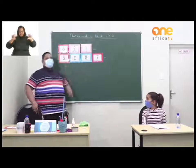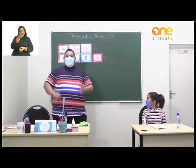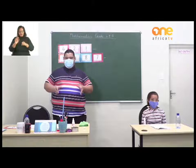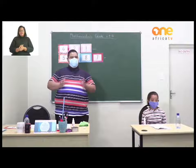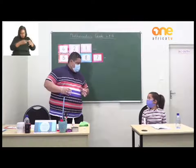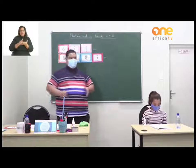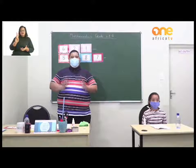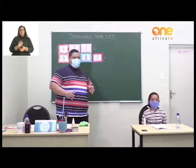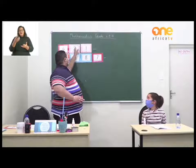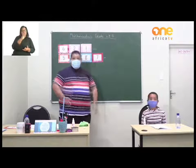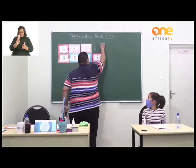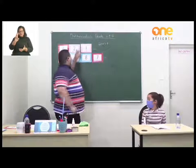Let's go to the chalkboard. Here we have 621. They want us to write that number in expanded notation, so we're going to break up the numbers according to their values. The first number we write is the 6. Going back to place value, the 1 is a unit, the 2 is a ten, and the 6 is a hundred, so the value of 6 is 600.